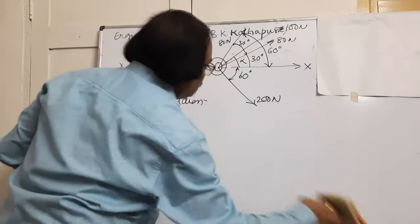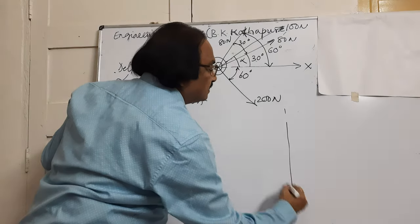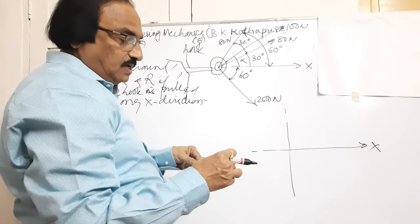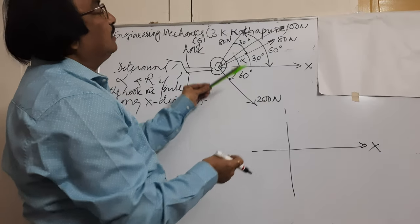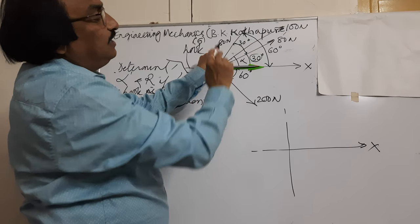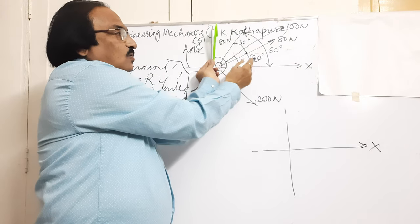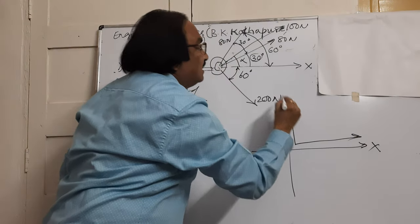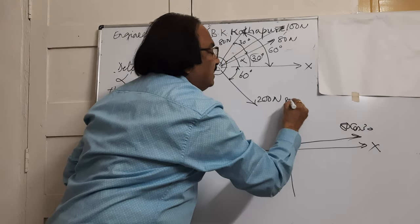First job is to resolve the forces horizontally and vertically. Now this first 80 Newton is making an angle of 30 degrees. If I resolve horizontally, we go along the angle to the right; if I resolve vertically, we go away from the angle and the direction is up. So the horizontal component is 80 cos 30 and the vertical component is 80 sin 30.